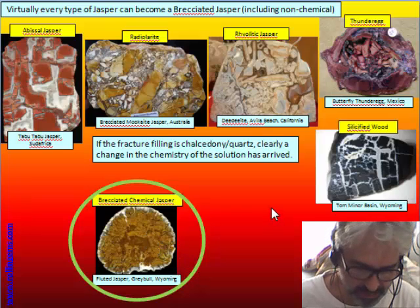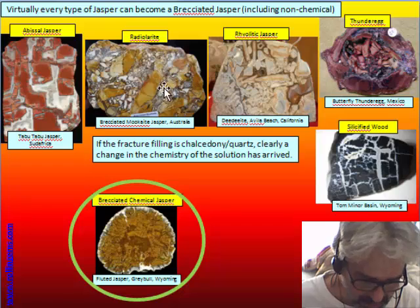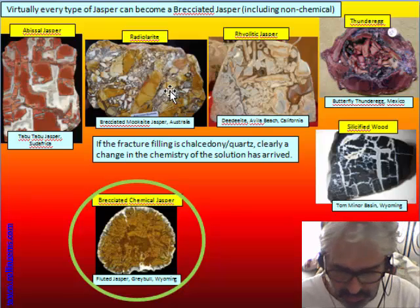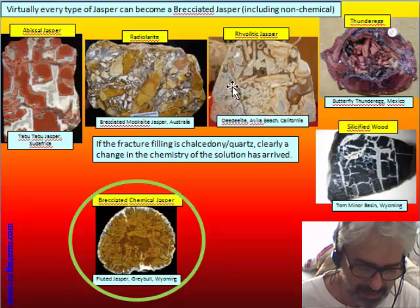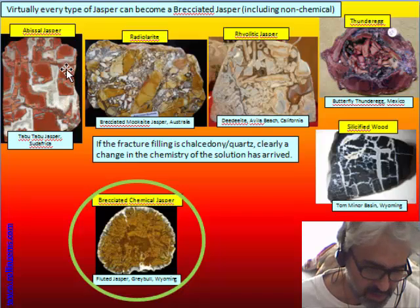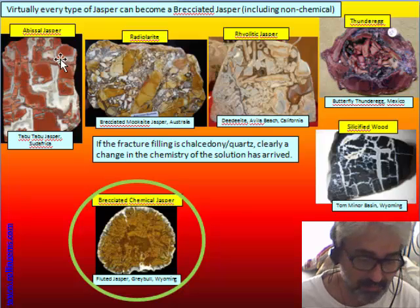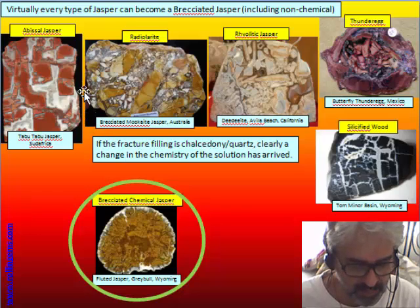Chemical jasper with brecciation: all these jasper show the cement of the breccia, the filling of the space, that is made of chalcedony or sometimes microcrystalline quartz — not jasper, but chalcedony. This suggests that there is a change in the chemistry. Clearly the jasper formed first, then there is a change in chemistry, the process of brecciation, and the last formed material is chalcedony.